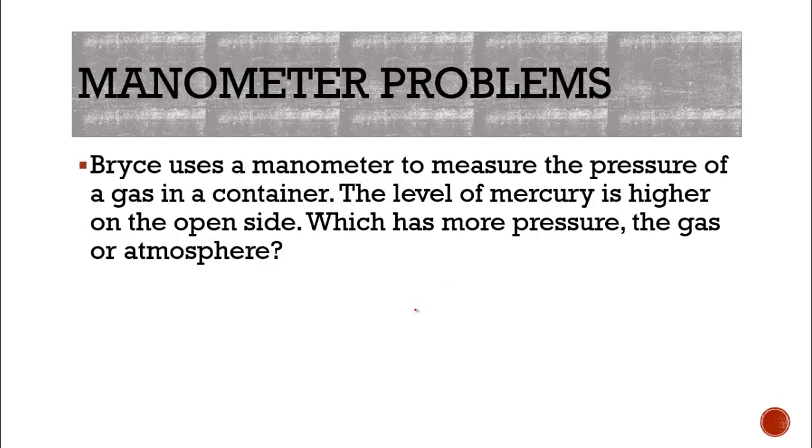For example, Bryce uses a manometer to measure the pressure of a gas in a container. So we've got a container that contains some kind of gas. She hooks it up to a manometer. What we know then is the level of the mercury is higher on the open end. Well, in our description earlier, we had this closed. Sometimes it's not always closed. We could have it open to the actual atmosphere. So open to the outside world or your classroom or whatever. And then we could change the level of this mercury that's in there. So this would be our open end.